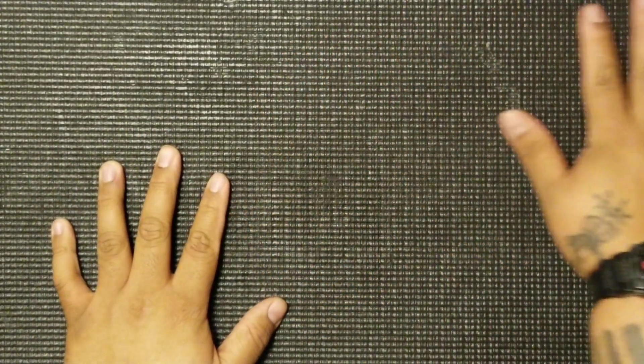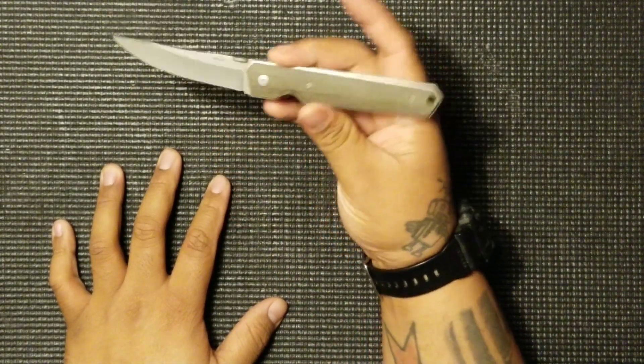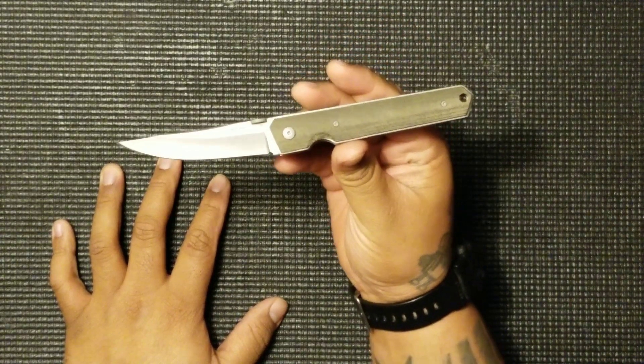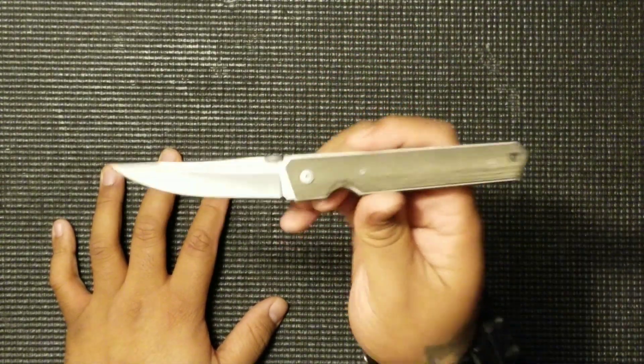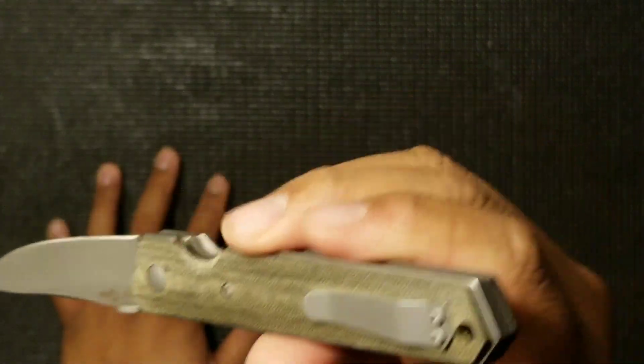And that is the Lucas Burnley Boker Quiken. The reason why I knew I wasn't gonna like this knife is because micarta. I do not like micarta handles.